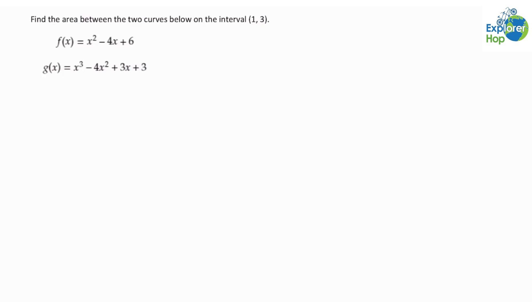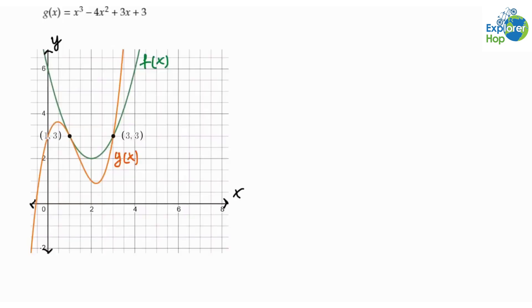Let's first take a look at the graph of these two functions to help us visualize the area we're trying to find. From the graph we are trying to find the area of this shaded region. To do so we take the area under f(x) and subtract the area under g(x), since f(x) is greater than g(x) over this interval.